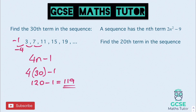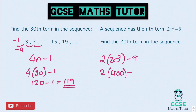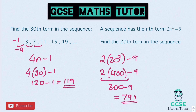The second practice question: a sequence has nth term 2n squared minus 9, find the 20th term. We substitute 20: two lots of 20 squared, take away 9. First, 20 squared — 20 times 20 is 400. Then two lots of 400 is 800. And 800 minus 9 gives us 791 as the 20th term.